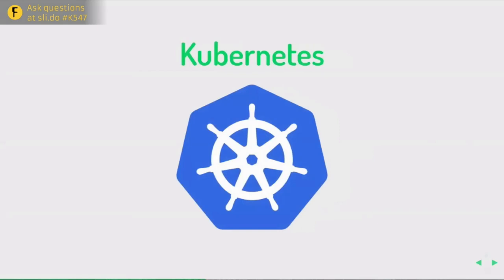Now, Kubernetes. Kubernetes is a container orchestration platform. Basically, you take a description of the containers you want running, give it to Kubernetes, and Kubernetes decides where to spin them up or down. It automatically handles deployment, scaling containers up and down — you can say you want 10 replicas of a container and Kubernetes handles starting them on different nodes — and general management.